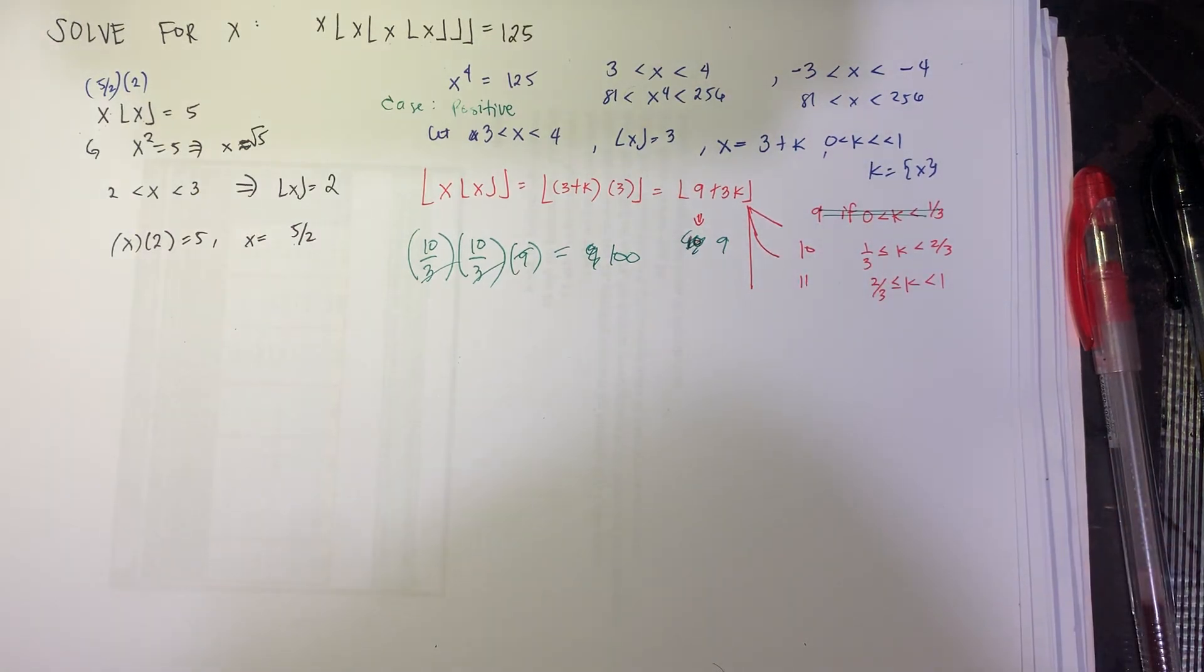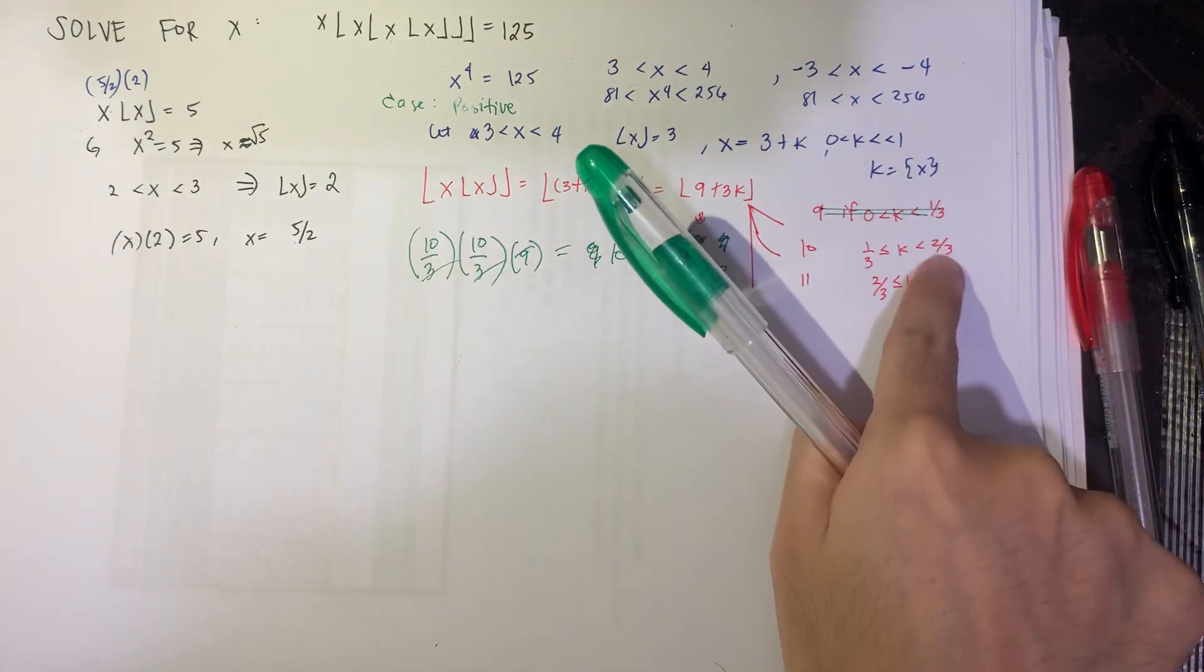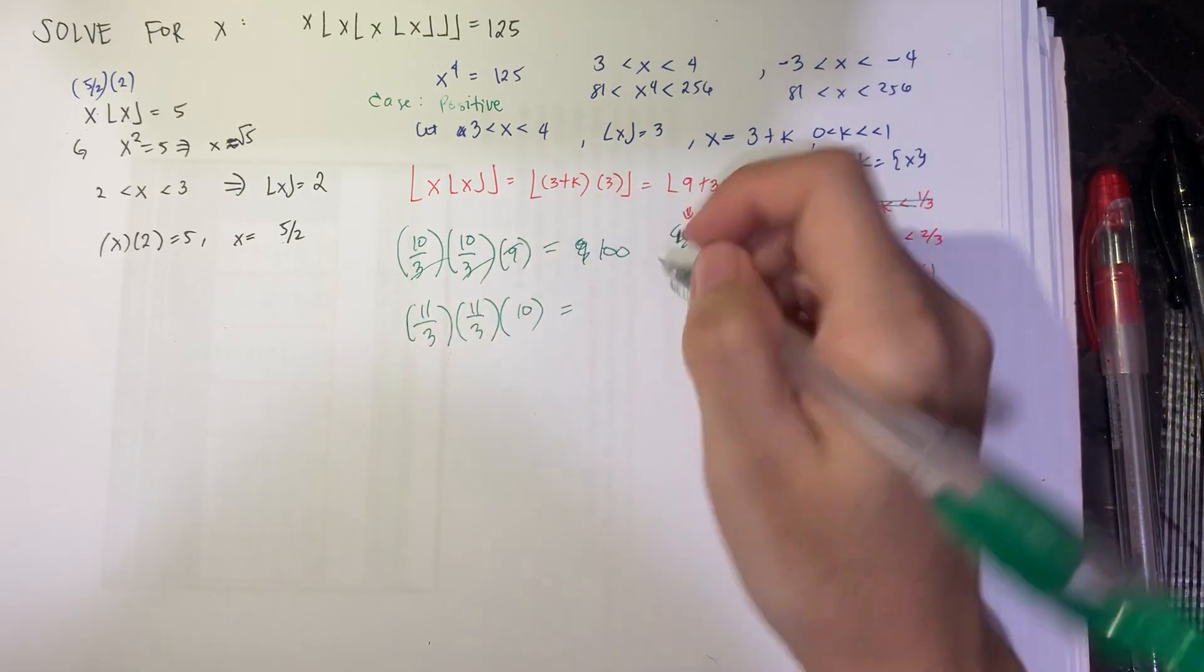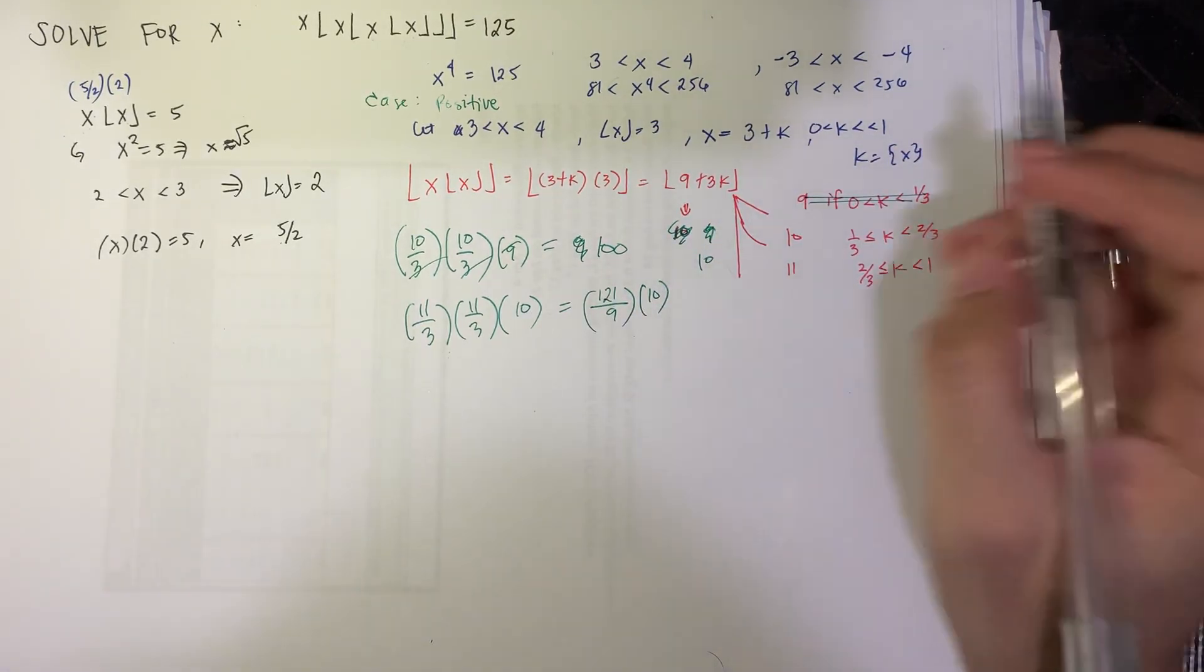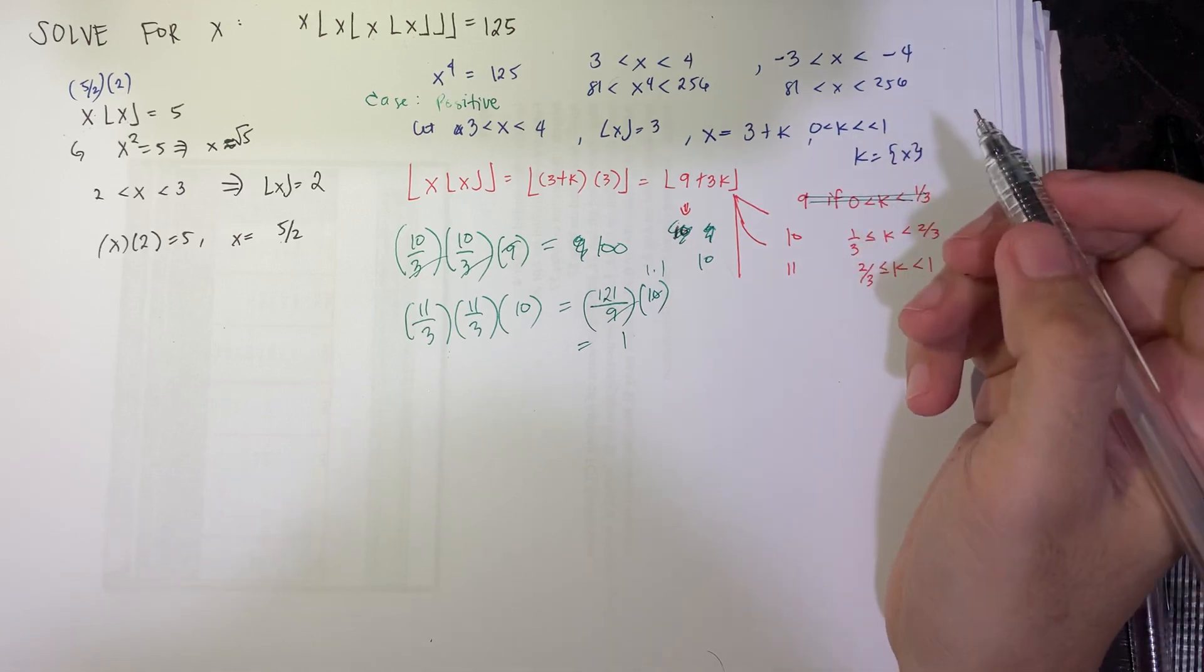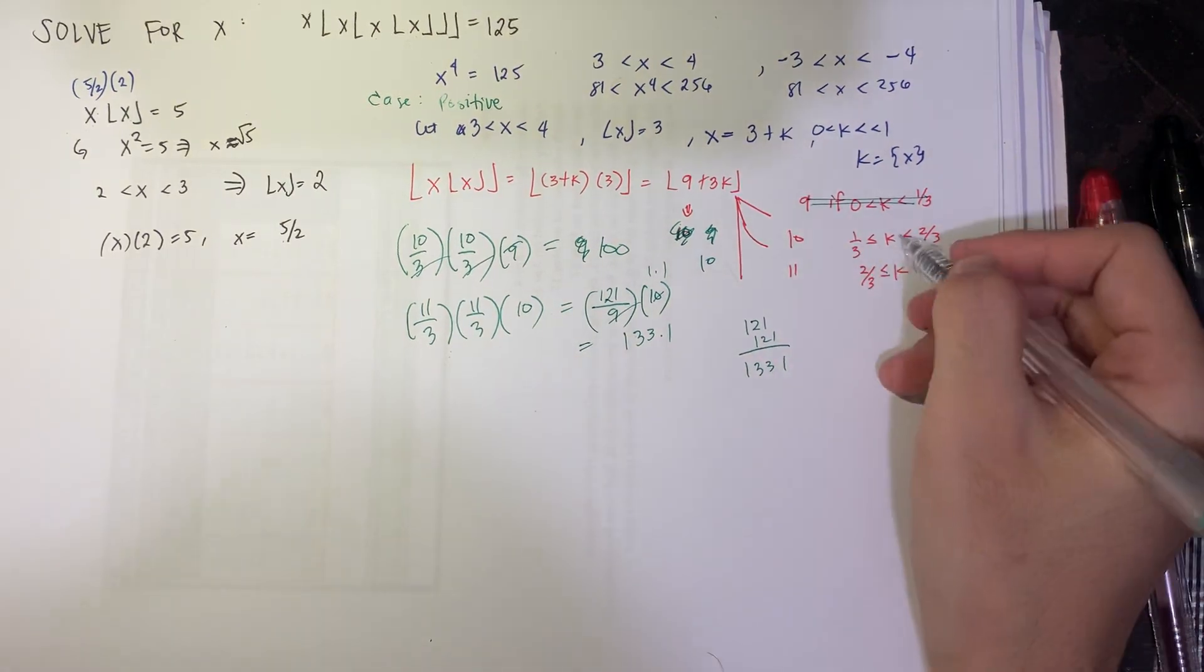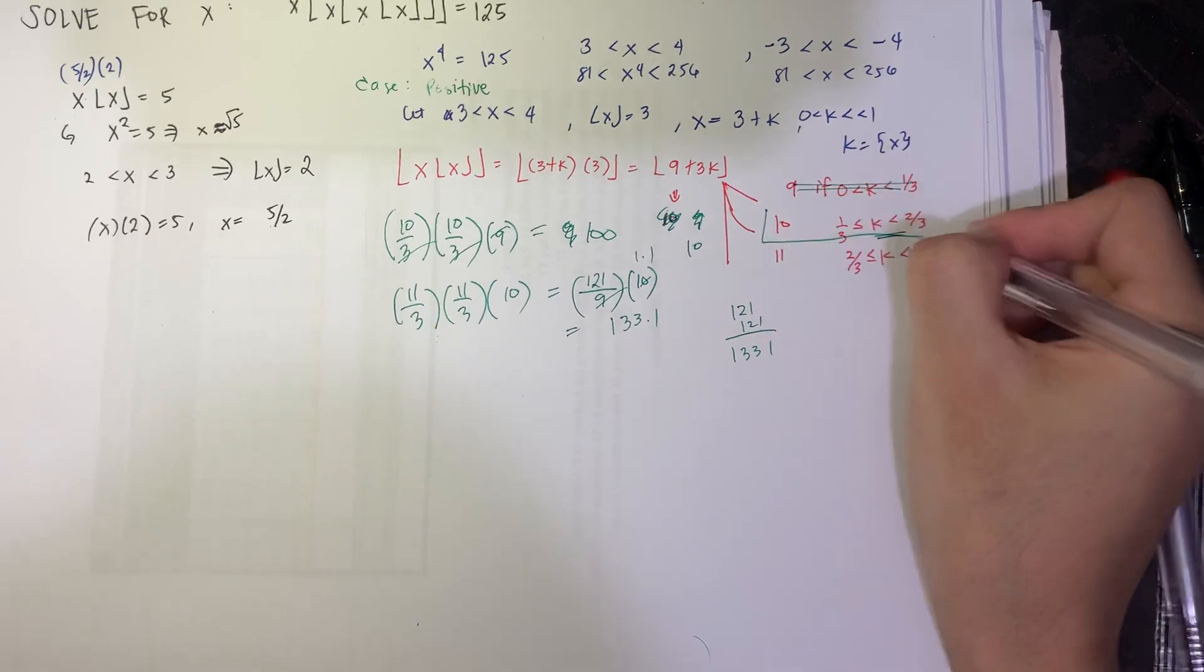Next, we proceed to the case when k is between 1 thirds and 2 thirds. So similarly, this becomes 10. And then this is at most 2 thirds. So 3 plus 2 thirds, that's 11 over 3. 11 over 3 times 11 over 3 is at most 10. So this is 121 over 9 times 10. This is roughly 1.1. So this gives you roughly around 133.1. So this means that your case here, if it's between here, it's from 100 up to 133.1. So 125 is between this interval, which means that this is the case we're looking for.